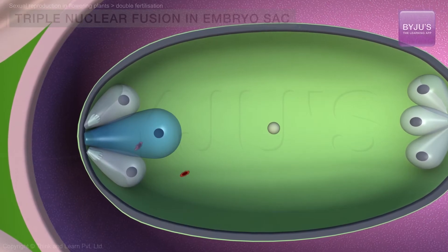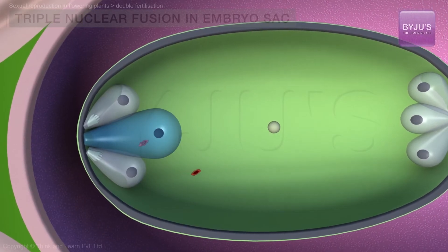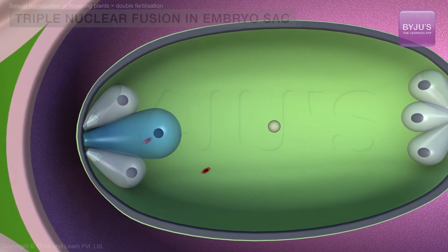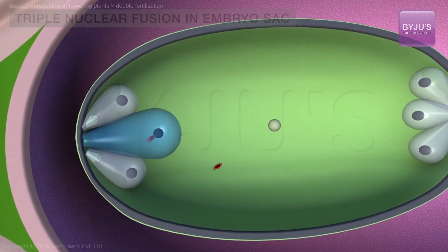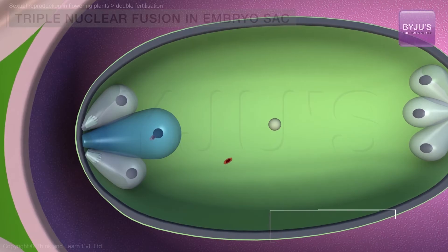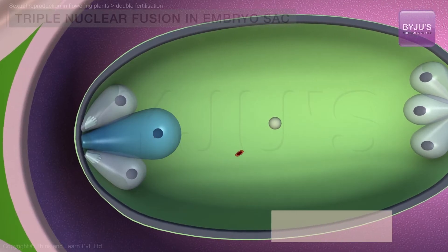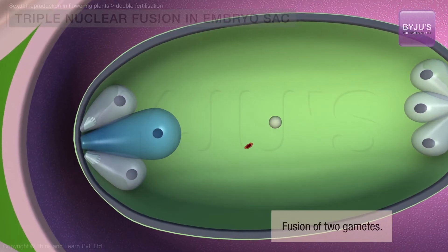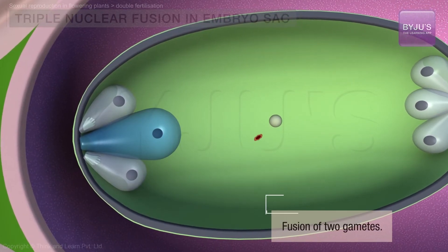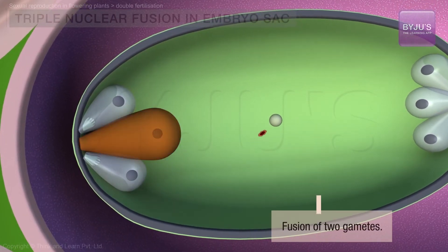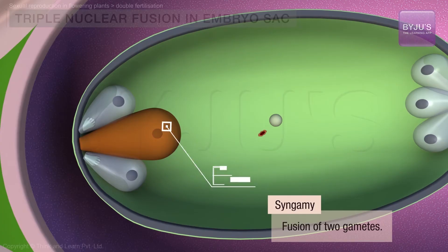One of the male gametes moves towards the egg and the other to the polar nuclei. Only one of the two sperms fuses with the egg, resulting in syngamy, or true fertilization, which leads to the formation of a diploid zygote.